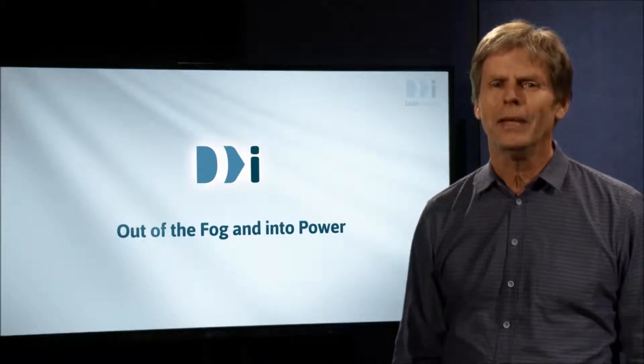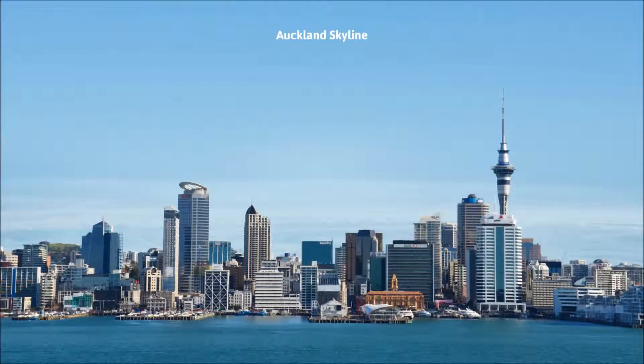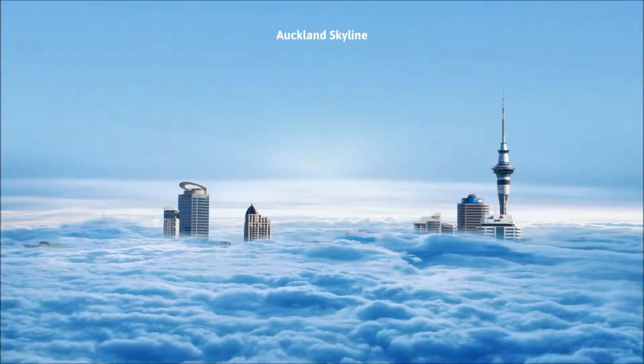I've mentioned power, but how does the fog come into this? Here's a picture of the Auckland skyline. Here's the same picture but with a thick ground hugging sea fog hiding most of the city. If that was our only view, the only buildings we'd know actually existed would be those tall enough to poke up above the fog.